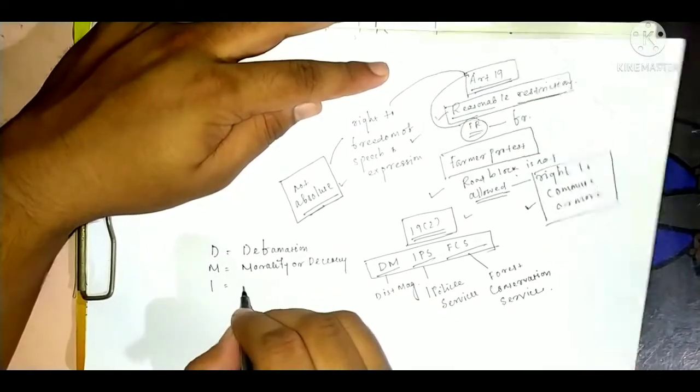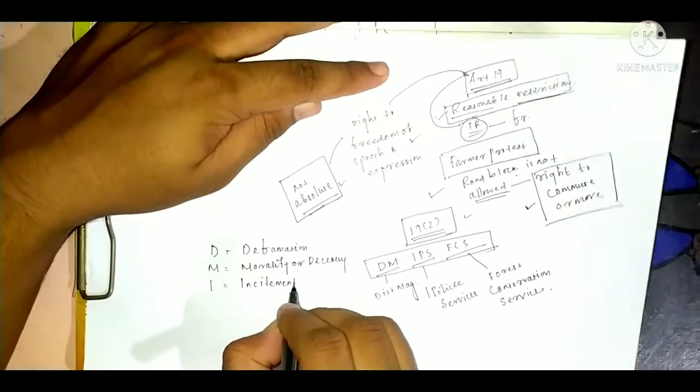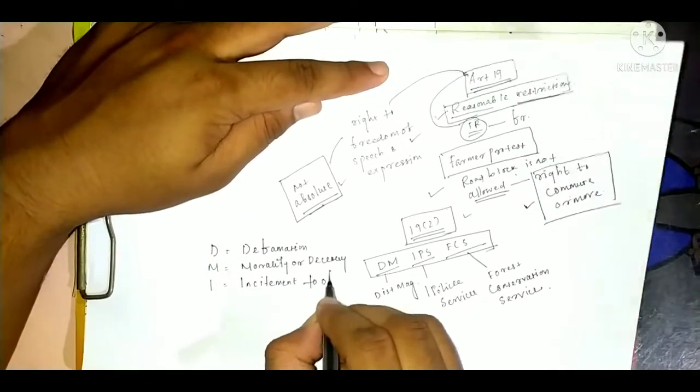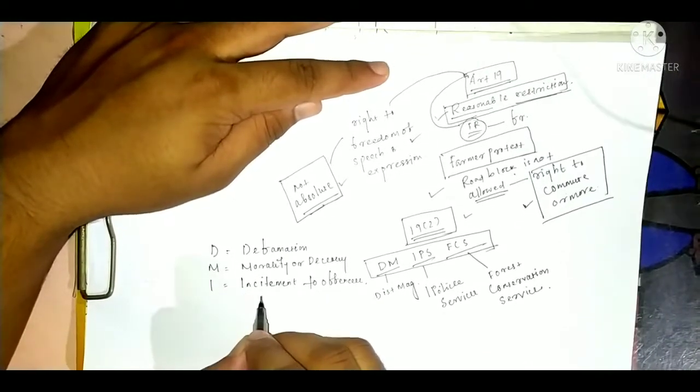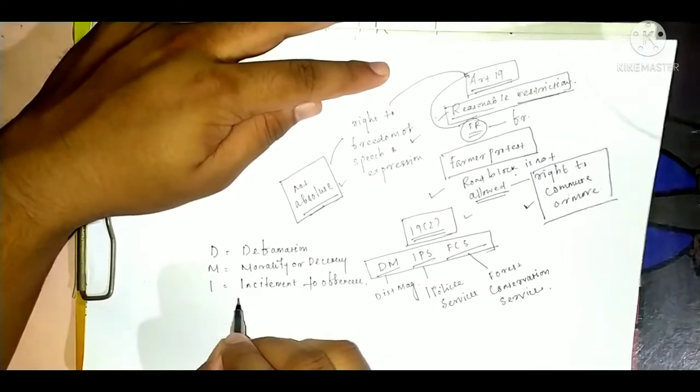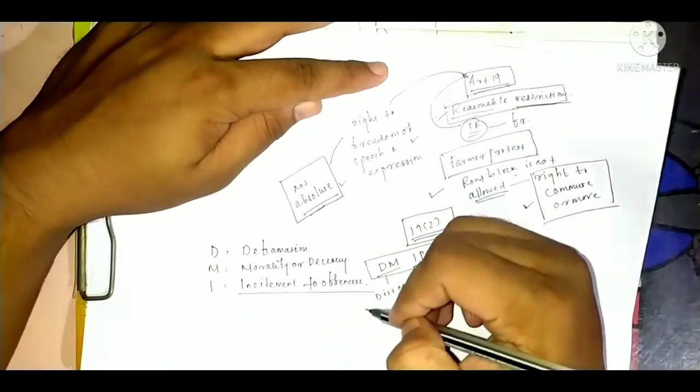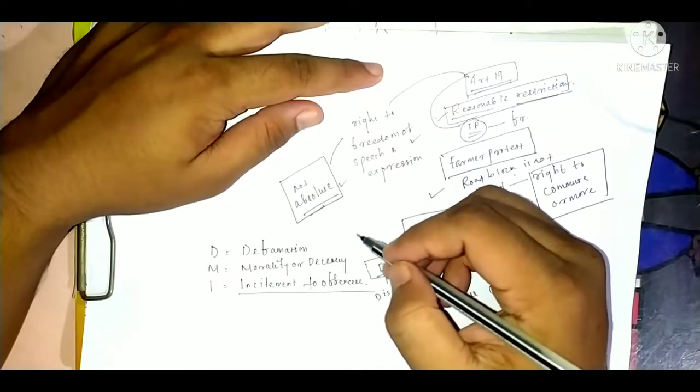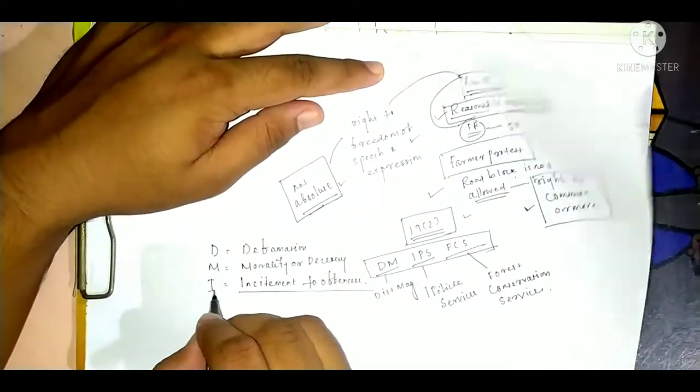From I, it is incitement to offence. If your protest or freedom of speech and expression, however, the incitement of offence, if your offense creates, then the state has the power to curb it.